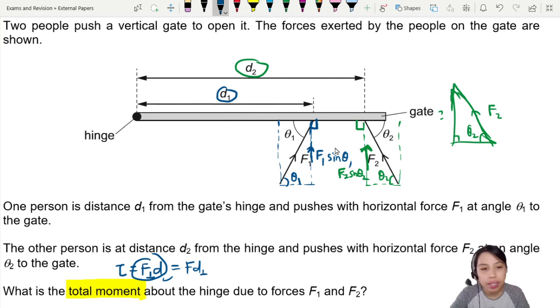Now we want to find the total moment. We do the net moment, so all the clockwise plus all the anti-clockwise, but there's only one direction here. All these forces are going to push this door in this direction, which is anti-clockwise.